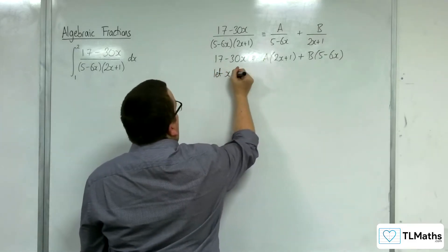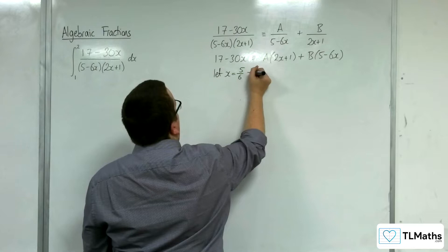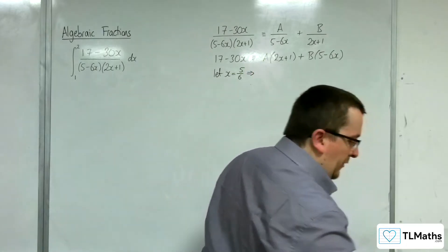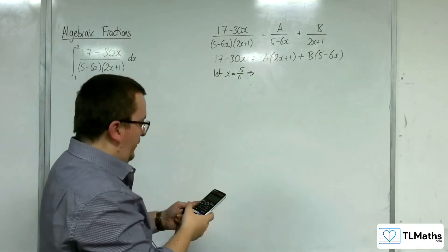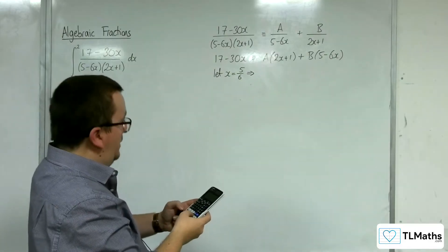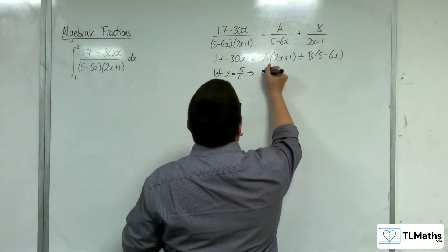So let x be 5 sixths. So, substituting that into the left-hand side first, 17 take away 30 lots of 5 sixths gets me negative 8.